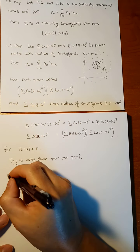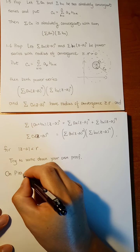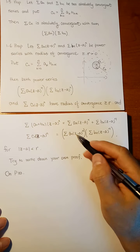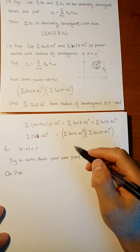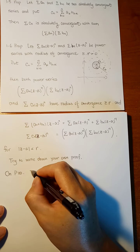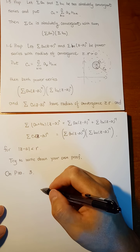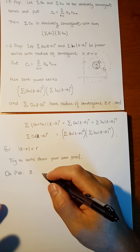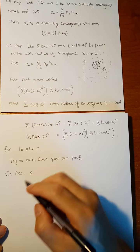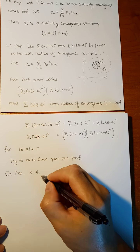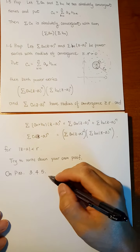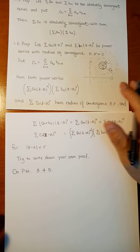On page 33, there's a list of exercises. Exercise 2 asks you to write down the complete proof of Proposition 1.6. Exercise 3 is about lim sup and lim inf — you may be seeing this notation for the first time. Also try problems 4 and 5, which are also about lim sup and lim inf. These are theoretical results.